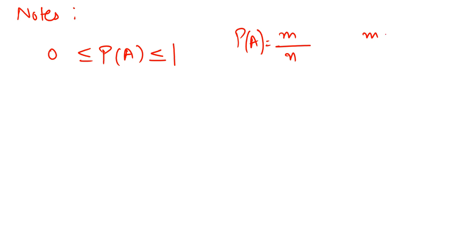Since m is less than or equal to n, when m equals n, the probability equals 1, and when m equals 0, the probability equals 0. So the probability always lies between 0 and 1.